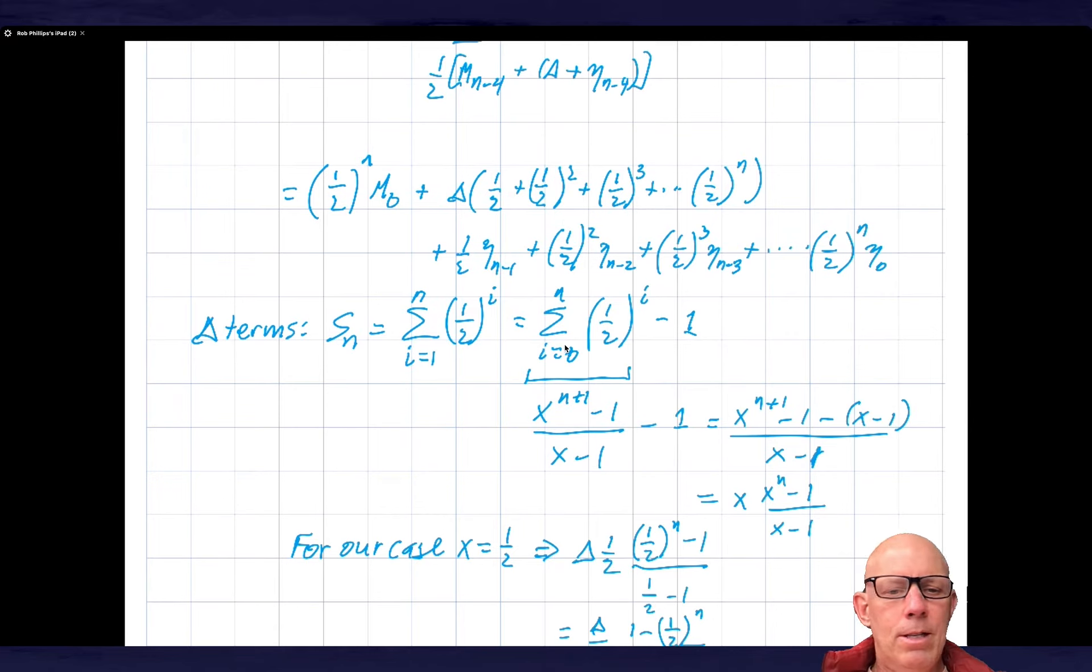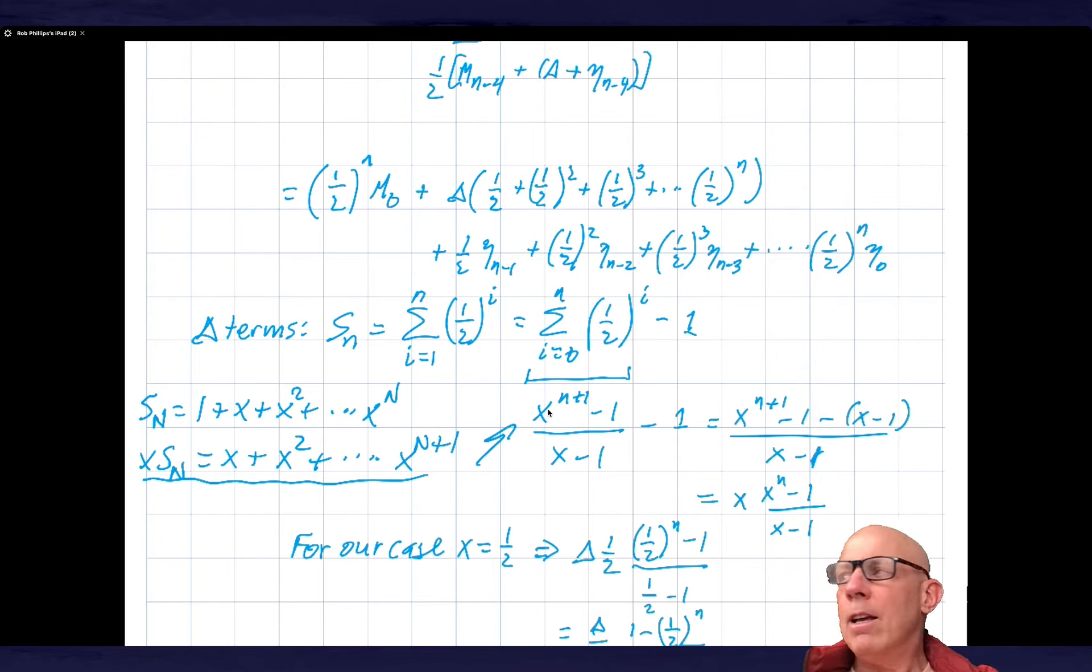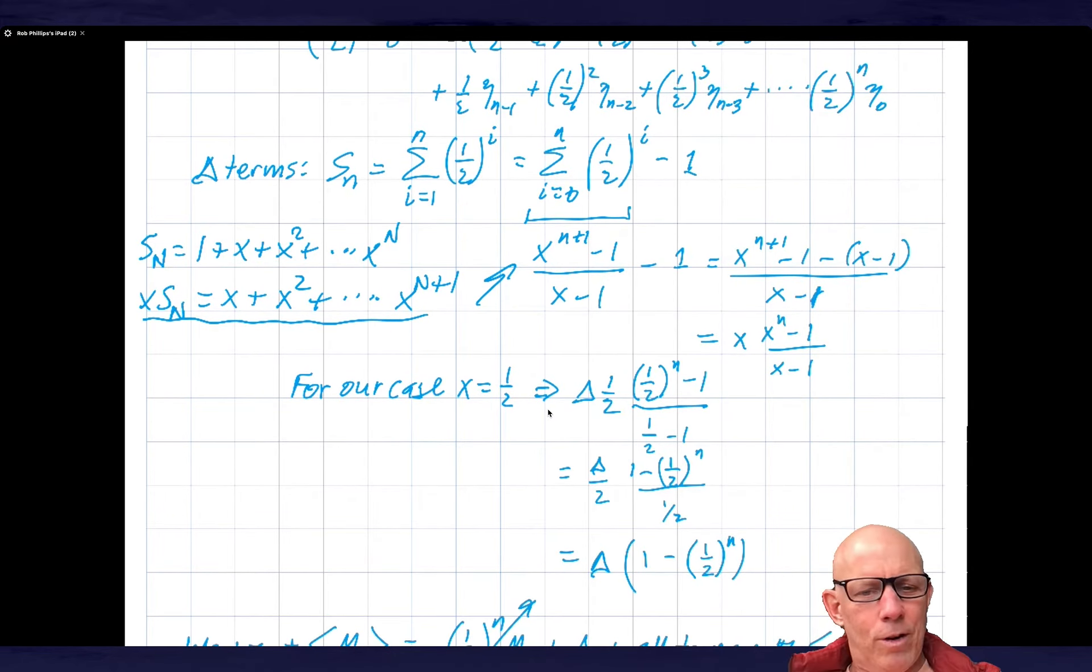As a little aside, if I have a geometric series that goes one plus x plus up to x to the n, then x times sn equals x plus x squared up to x to the n plus one. If I subtract these two things from each other, I will get this formula. I can analyze the sum over one half to the various powers.